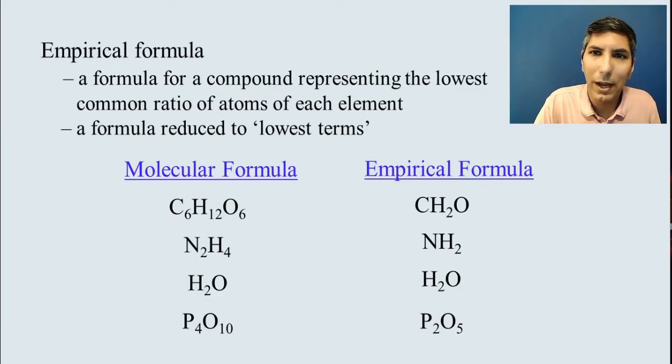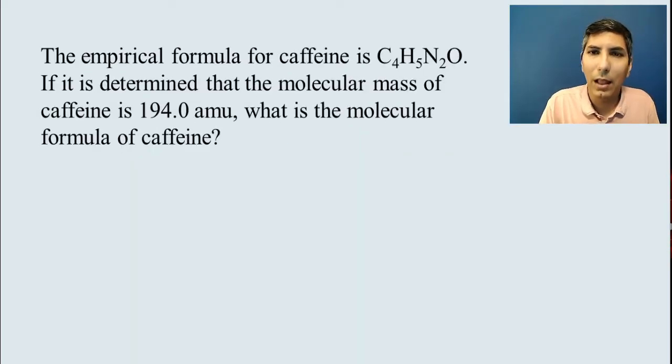So is there a way to go from empirical formula to molecular formula in the case of our little caffeine problem here? Well, yes, there is. And that little nugget of information that we need in order to make that last conversion is the molecular mass of the substance. So here's the empirical formula of caffeine that we just calculated. And it says that the molecular mass of the caffeine is 194.0. With that, now we can go to the molecular formula.